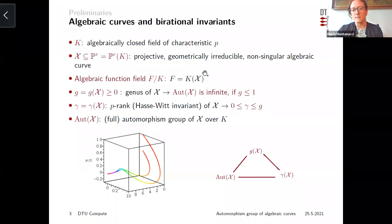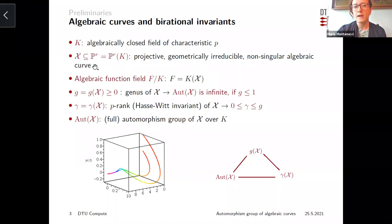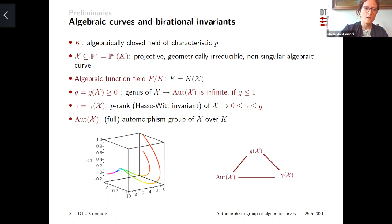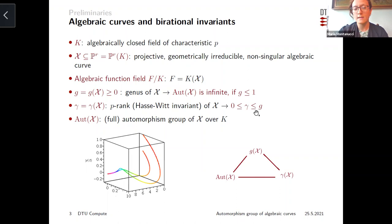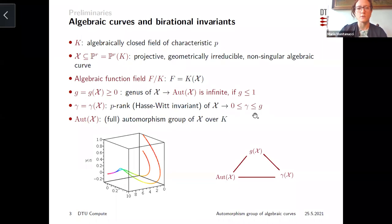There is a bijective correspondence between points of our curve and places of the function field, so we can choose the geometric or algebraic language according to our convenience. The automorphism group Aut(X) is a birational invariant, but two other important birational invariants are known: the genus of the curve, a non-negative integer, and the p-rank, or Hasse-Witt invariant, which is again non-negative and at most equal to the genus. Ordinary curves are exactly those for which the p-rank is the largest possible, equal to the genus.